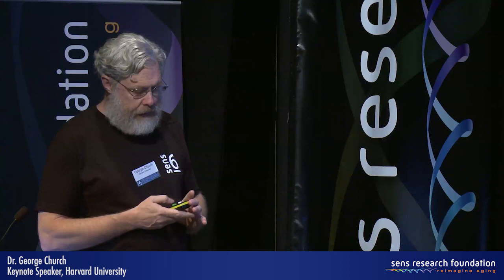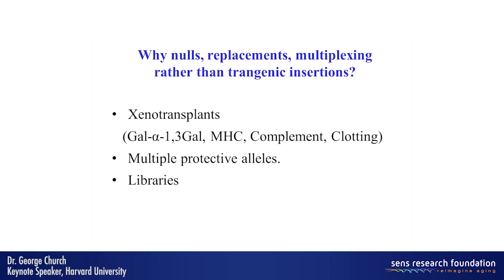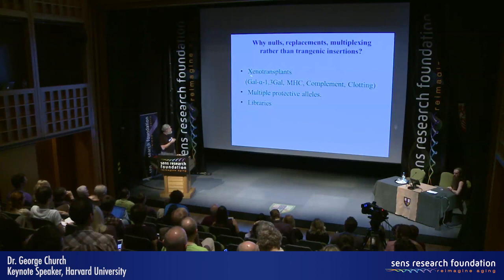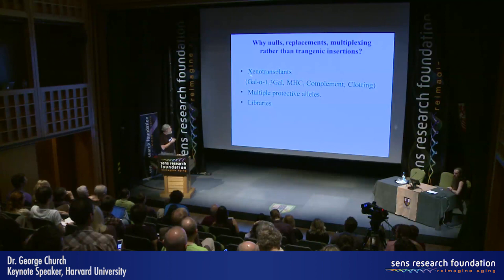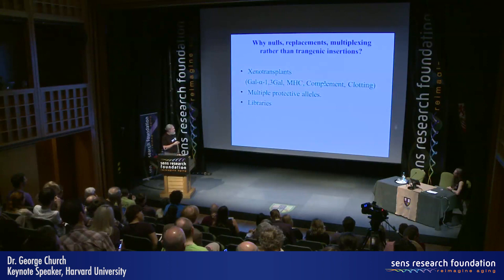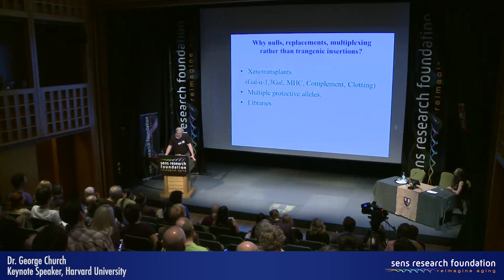As an example of xenotransplantation: there's a shortage of organ donors, and if we grew them in an animal like pig — one of the favorite candidates — we have to make them histocompatible. Most non-primates express sugar groups like alpha-gal, and they have multiple major histocompatibility loci, complement, and clotting factor incompatibilities as well. But with a couple of dozen changes, you might be able to make real progress here, and there has already been progress made with the primitive genome engineering we have recently.